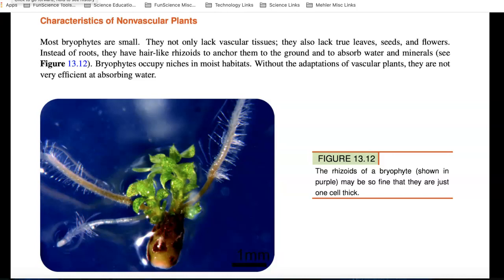Let's look at the characteristics of non-vascular plants. Another name for non-vascular are bryophytes. They're small. They don't have any vascular tissue. They also lack true leaves, seeds, and flowers. Instead of roots, they have rhizoids that come out and anchor them to the ground or absorb water and minerals. They occupy niches in moist habitats and are not very efficient at absorbing water.